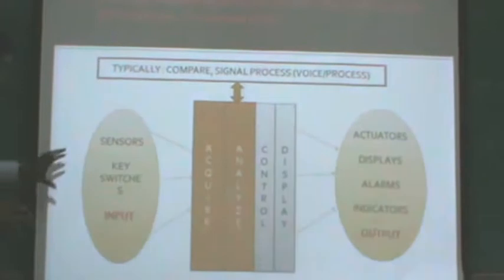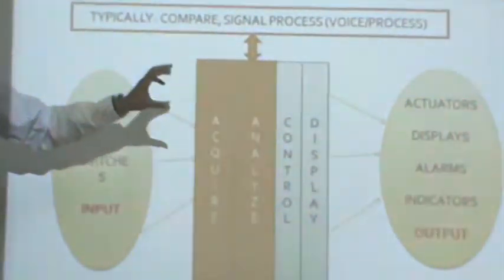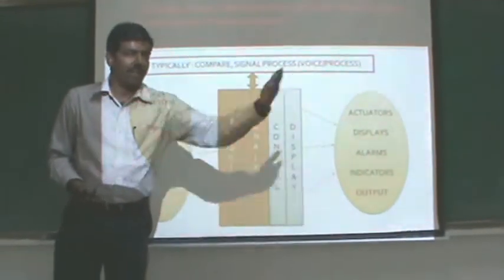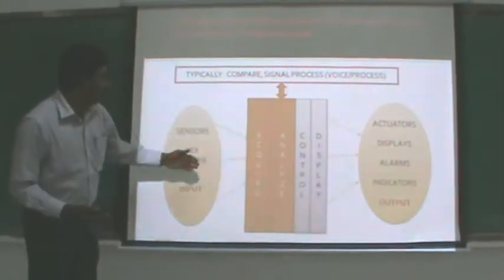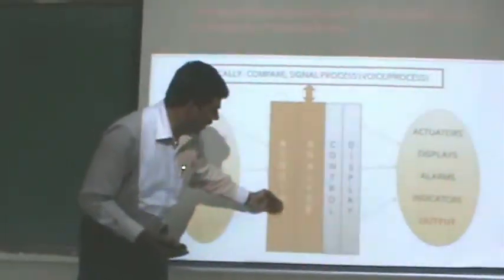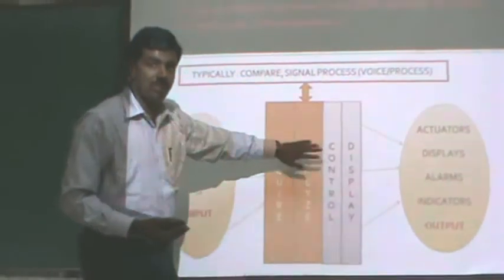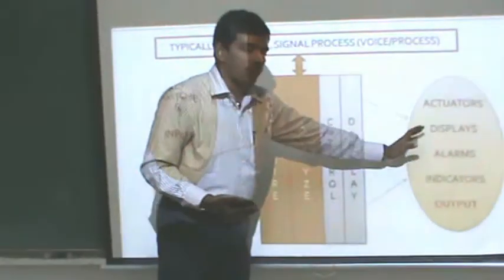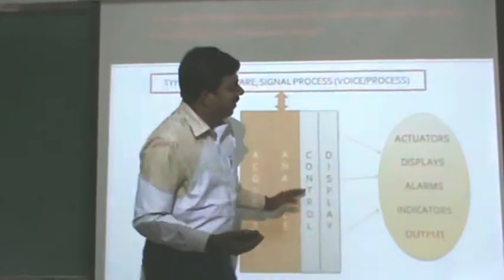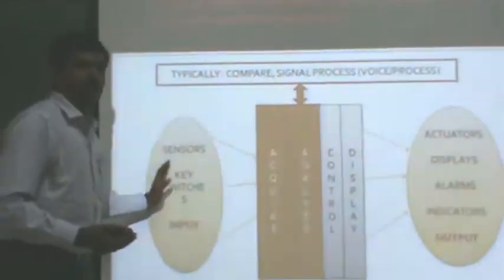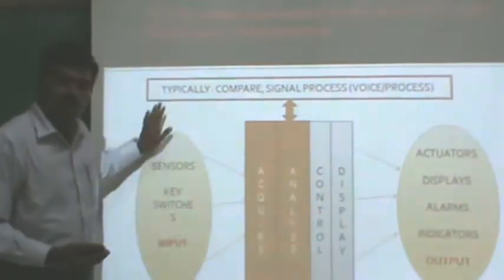Diagrammatically, any system — including an embedded system — works as: acquire, analyze, and give output. For an embedded system, input is acquired from sensors, switches, or other input devices. It is then analyzed and processed using microcontrollers or processors, programmed by developers. The output is sent to a display for viewing, or used to drive actuators, alarms, or indicators. Input, processing, and output together form an embedded system.